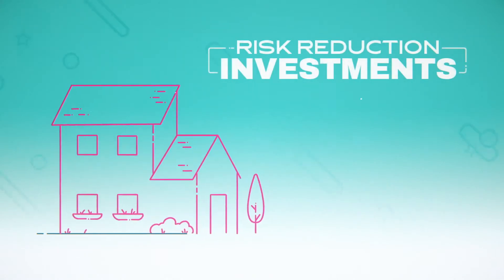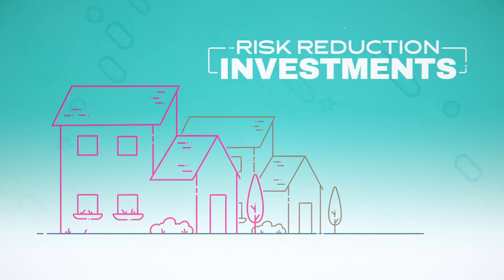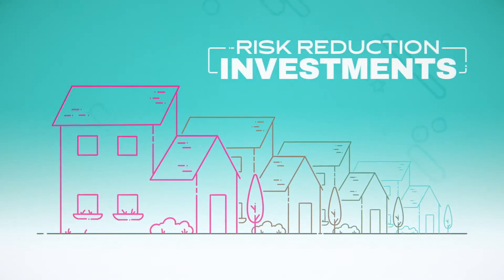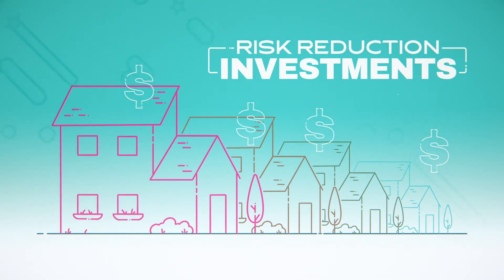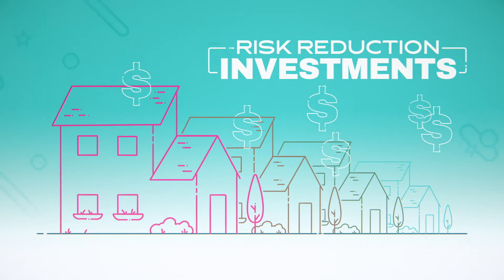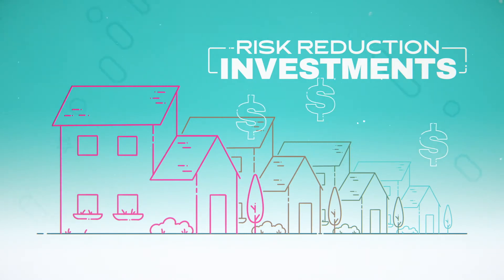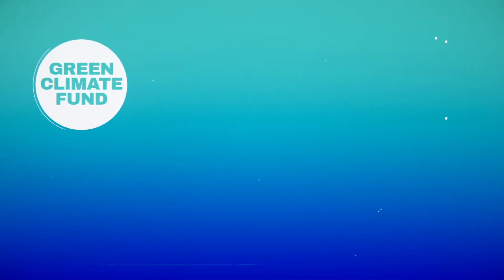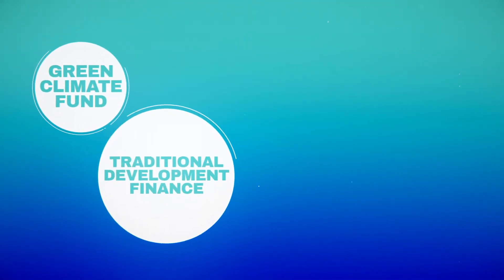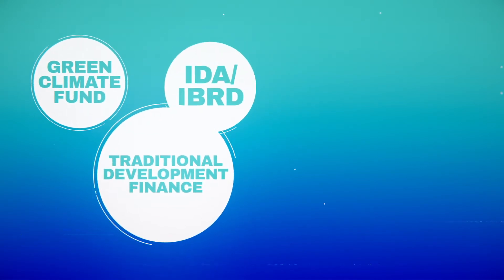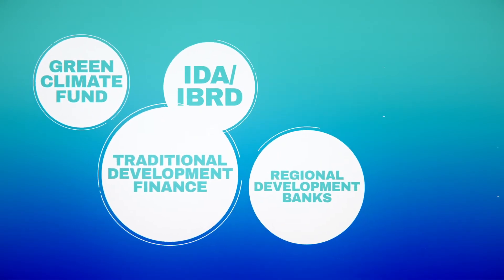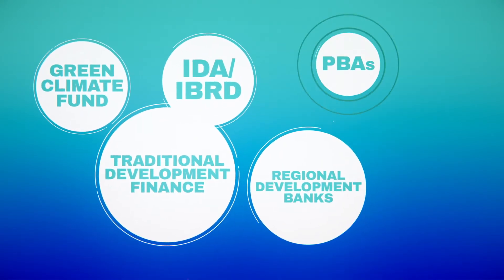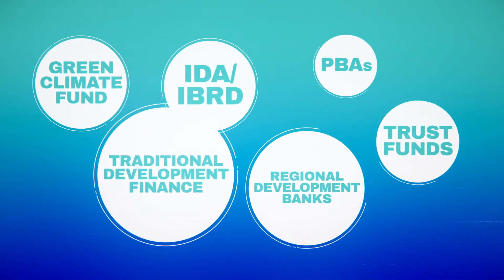Risk reduction investments can focus on climate-proof housing or infrastructure. These come from budget allocations, which means allocating a set amount of funds in the event of a natural disaster to offset recovery costs. Funds from development partners such as the Green Climate Fund and traditional development finance, the IDA or IBRD, regional development banks, PBAs, and trust funds.